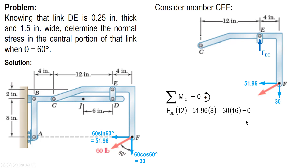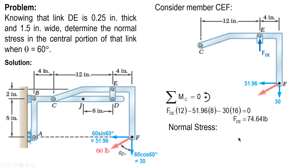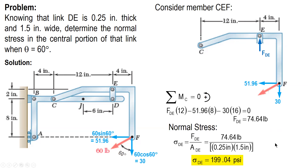We get FDE equal to 74.64. So after this, we can now solve for the stress. Normal stress is force over area, so we use this force. The area is 0.25 inches by 1.5 inches, and the stress comes out to 199.04.